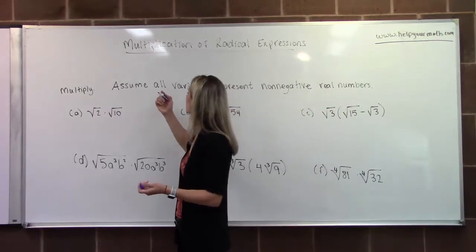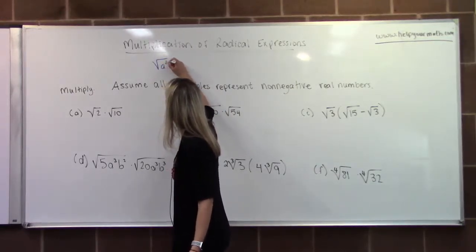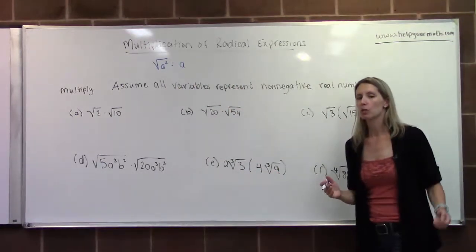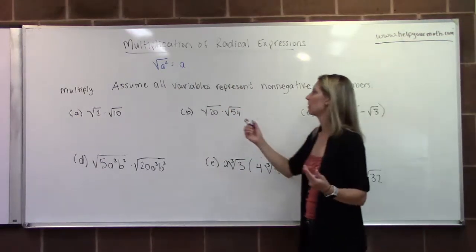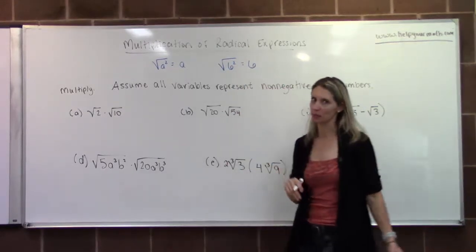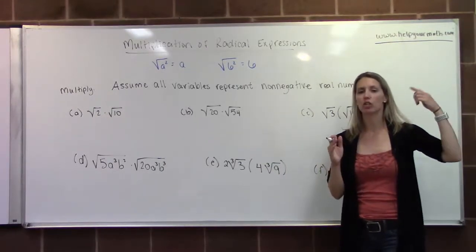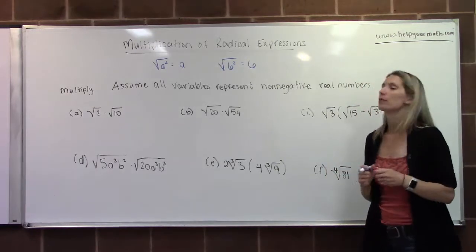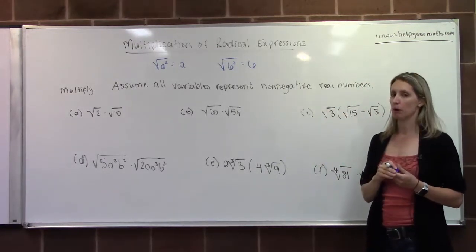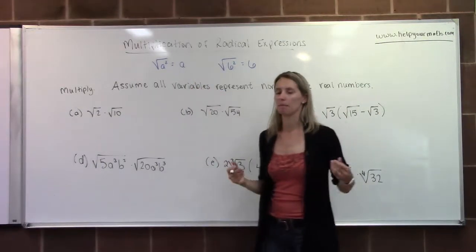One thing to know is that the square root of a squared equals just a outside the radical. For example, the square root of 6 squared equals 6. I don't need to compute 6 squared — if I have a square and a square root, those cancel out. We're assuming all variables represent non-negatives, so that's not an issue, and we get to assume a is something positive.